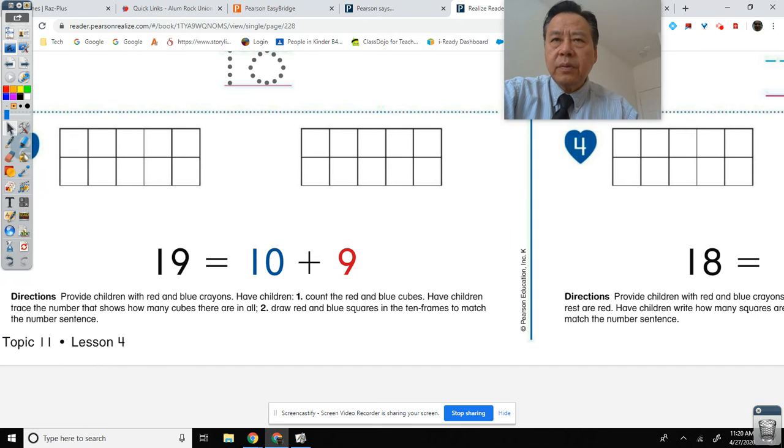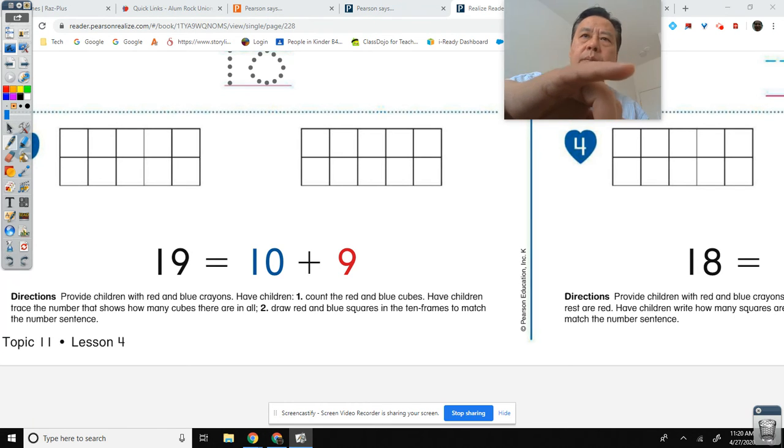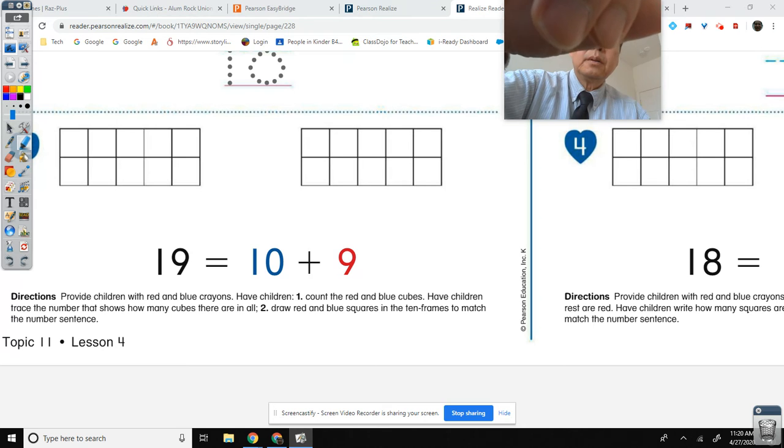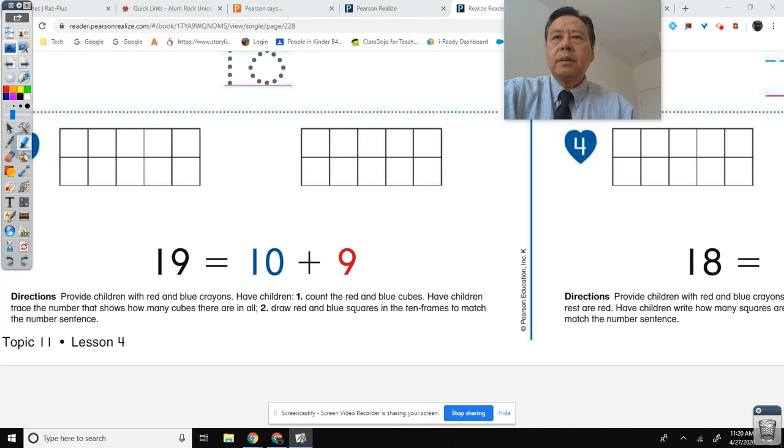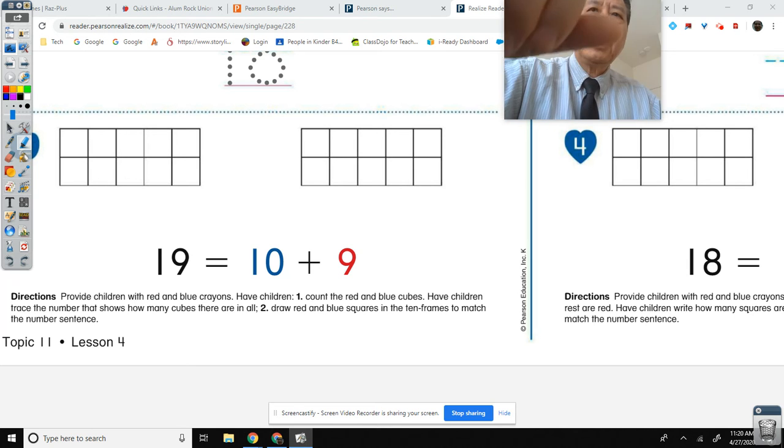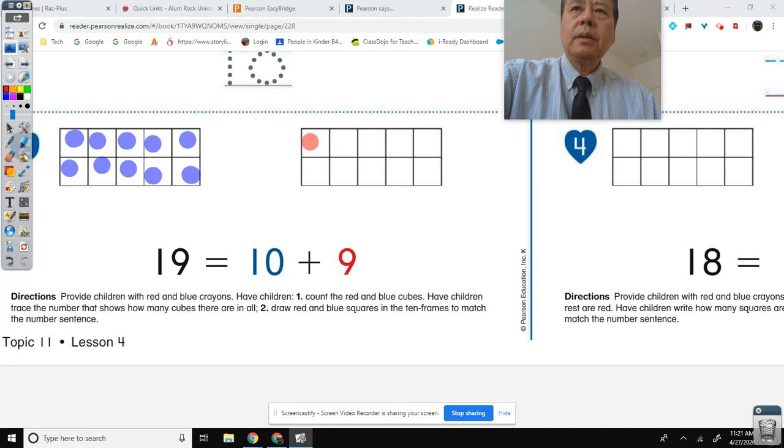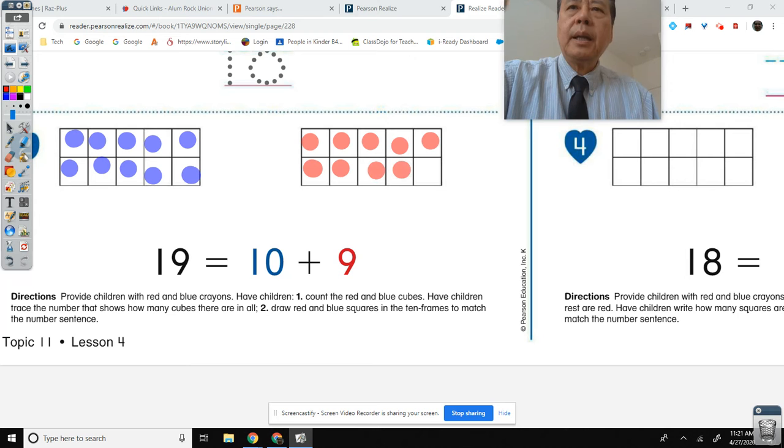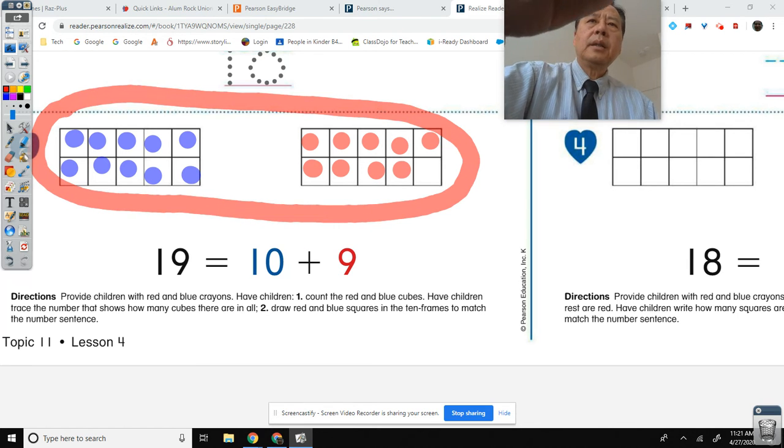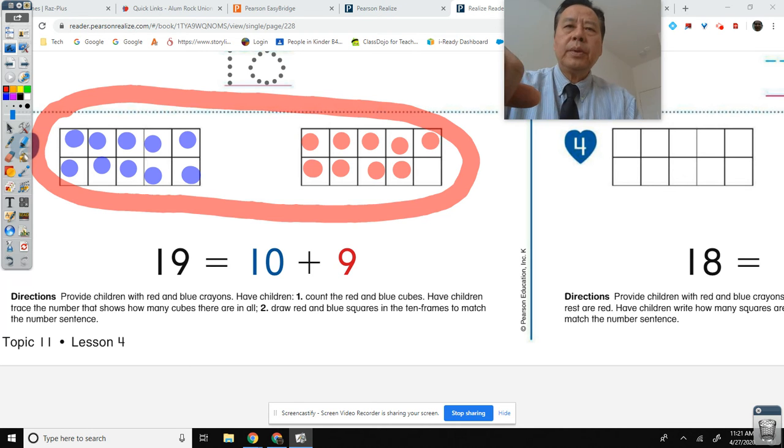Directions: Provide children with red and blue crayons. Number two: Draw red and blue squares in the 10 frames to match the number sentence. Okay. So one is 10, it's blue. You don't have to if you don't have the colors, just do pencil mark if you need to. 10. And then the next one is red. 1, 2, 3, 4, 5, 6, 7, 8, 9. Total 19. Is 10 plus 9. Pretty easy stuff.